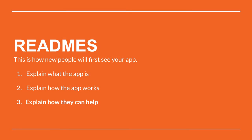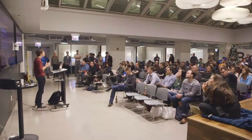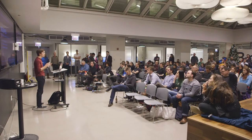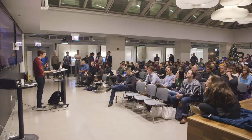First off, the most important thing about a project in terms of documenting it is the README. READMEs are really important for three main reasons: they explain how the app works, they explain what the app is, and they explain how people can help. If I'm a new person looking at your app, I look at your README — these are the things I should see.